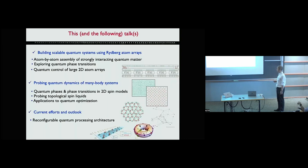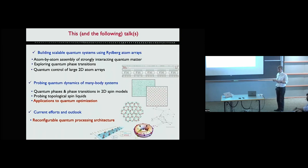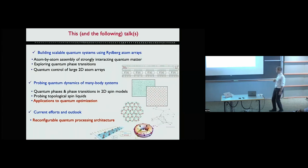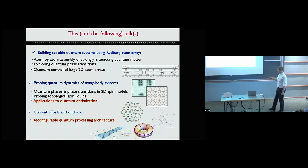In my talk I will focus on two examples of our recent work. One is the application of this method to accelerating quantum optimization — which is the topic of the NISQ research not yet mentioned at this conference — and then I will talk about our efforts to go beyond NISQ, in particular this reconfigurable quantum processing architecture.